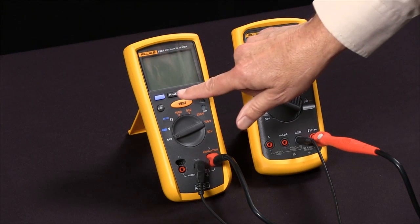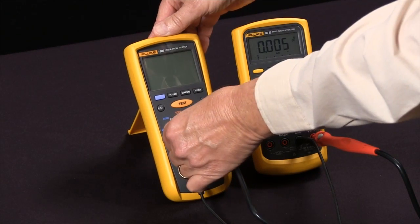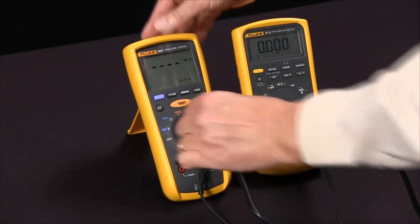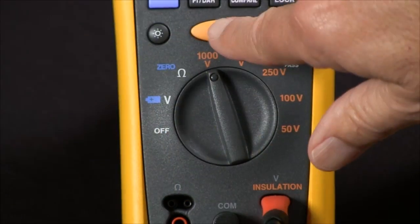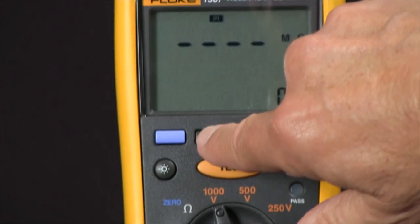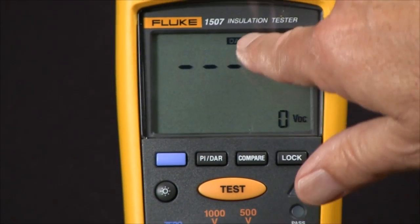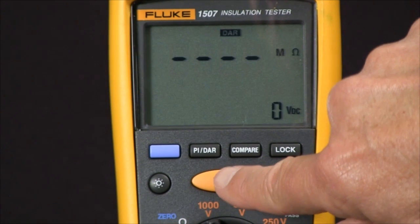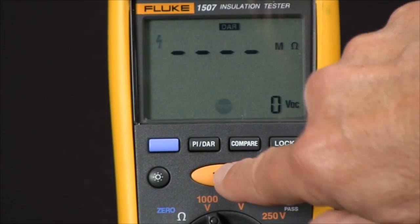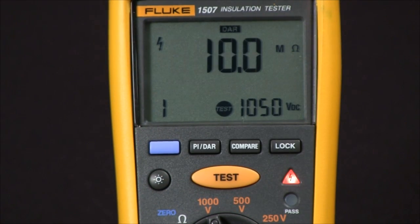We're going to pick 1,000 volts, so we rotate our selector knob to 1,000 volts and select our test. In this case, I'm going to do DAR, dielectric absorption ratio, and I push the test button, and it begins the test.